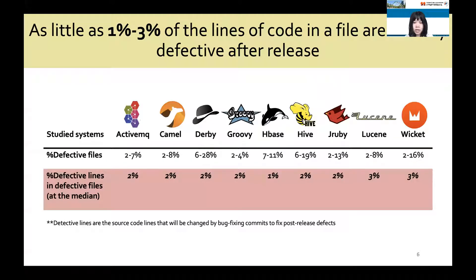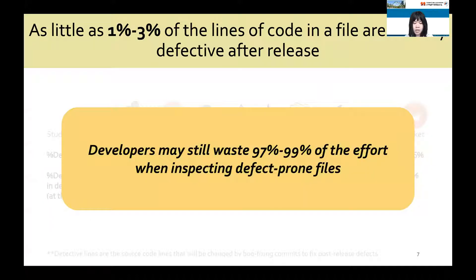In addition, our motivating analysis on 32 releases spanning 9 open-source software systems from the Apache open-source software project shows that as little as 1% to 3% of the lines of code in a file are actually defective after release. This suggests that developers could waste their SQA effort on up to 99% of clean lines in a defective file. Thus, line-level defect prediction models would ideally help teams save a huge amount of SQA effort.